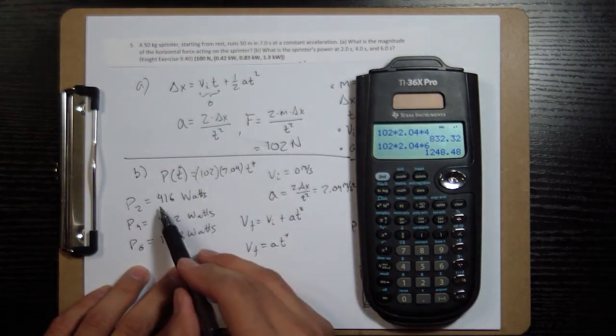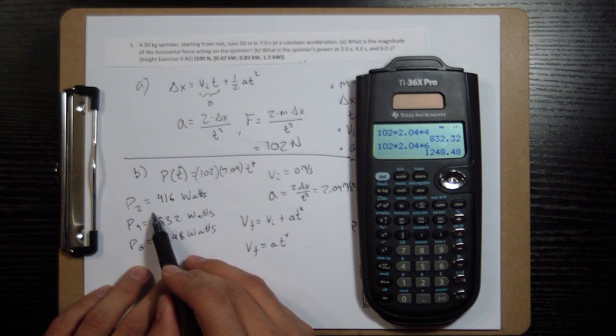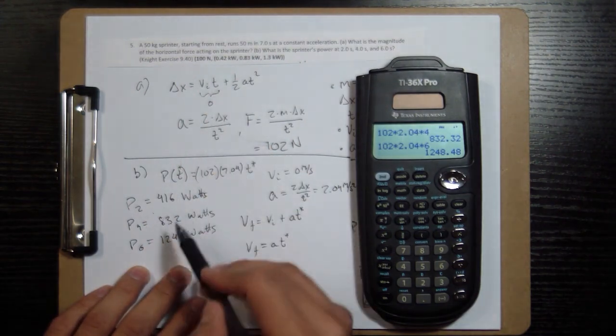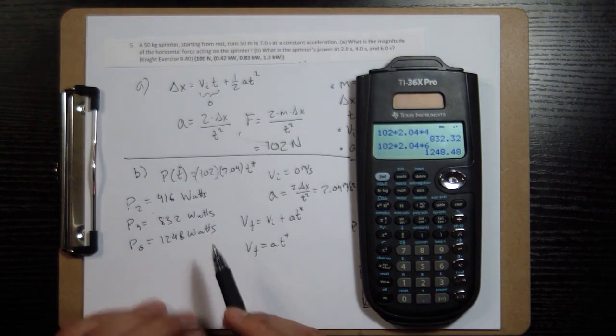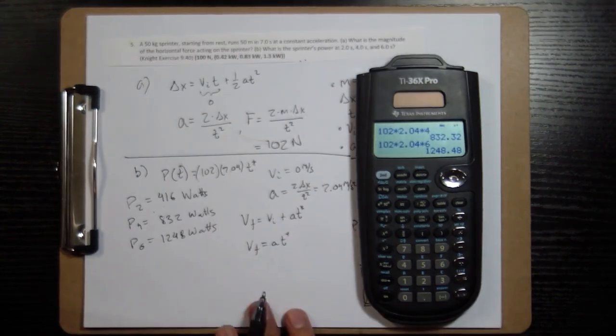So over here it's written in kilowatts, but if you move over the decimal three places, it'll be 0.42 or if you round it, 0.83 if you round it, and 1.3 if you round that. And that's it. Goodbye.